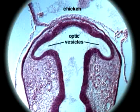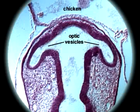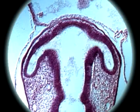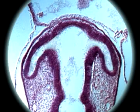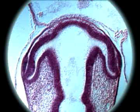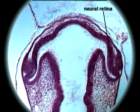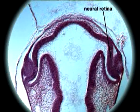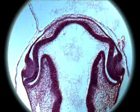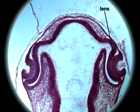We can watch the optic vesicles grow in a developing chicken embryo. Where the vesicles come into contact with the outside wall of the embryo, a layer of cells will fold, eventually becoming the neural retina. At the same time, the lens of the eye begins to take shape from a thickening of the outer layer.